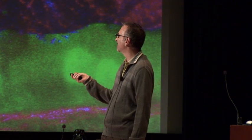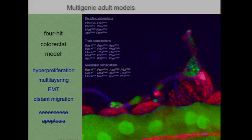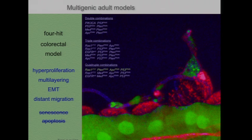Erdem took these four-hit models and has done a very extensive analysis, pushing towards a network analysis. Some of the phenotypes he finds are hyperproliferation, multilayering, and release of cells from the tissue with distant migration to form secondary metastasis-like growths. Also aspects of senescence and apoptosis. What's really fascinating is that different aspects of these emerge as we look at different combinations of oncogenes and tumor suppressors. Also to be clear, this four-hit fly has 10 transgenes in it — very difficult to build in a mouse.